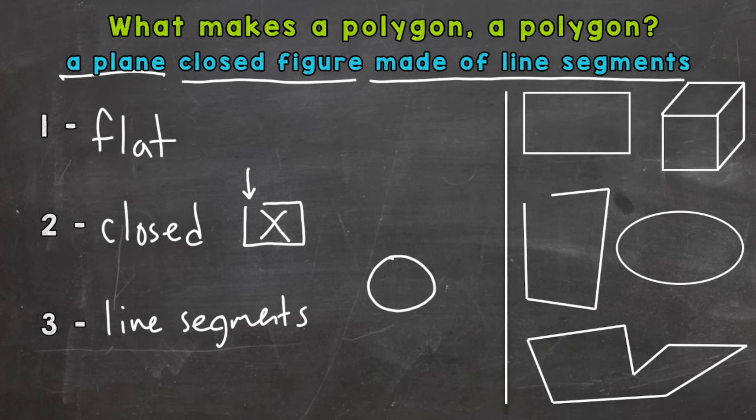Another counter example would be a figure like this. It's looking like it will be a rectangle but we have a rounded top here, so not a polygon because it's not made of all line segments.